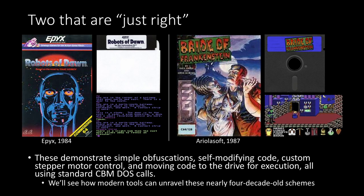I ended up with two games that were just right on the Goldilocks difficulty scale: Robots of Dawn on the left and Bride of Frankenstein on the right. I was able to make these selections based on copy protection analysis notes written long ago by Dr. Marcus Brenner for Robots of Dawn and Nate Larson for Bride of Frankenstein. Robots of Dawn is a well-known text adventure game by Epyx in 1984, based on an Isaac Asimov book. Bride of Frankenstein is something more obscure.